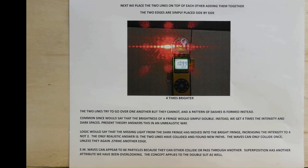The only realistic answer is the two lines have collided and found new paths. The waves can only collide once unless they again strike another edge. EM waves can appear to be particles because they can either collide or pass through another. Superposition has another attribute we have been overlooking. The concept applies to the double-slit as well.